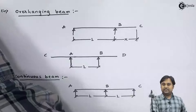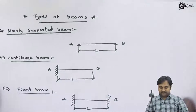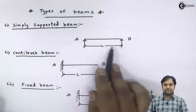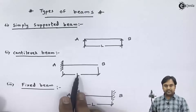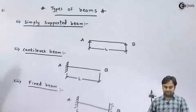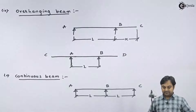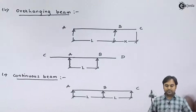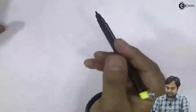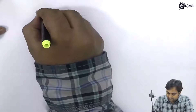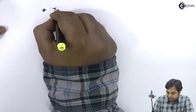As we have seen, there are different types of beams: simply supported beam, cantilever beam, fixed beam, overhanging beam, and continuous beam. Now let me give you the types of loading. Similar to the types of beam, here we have types of loads.